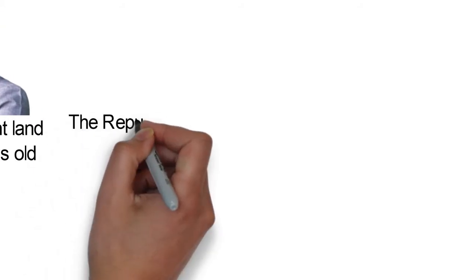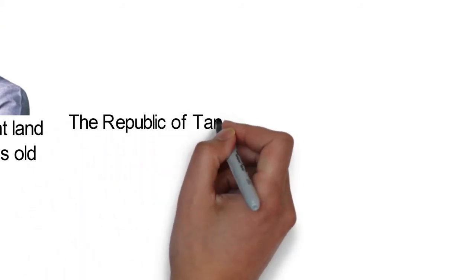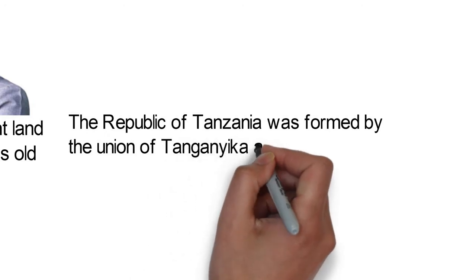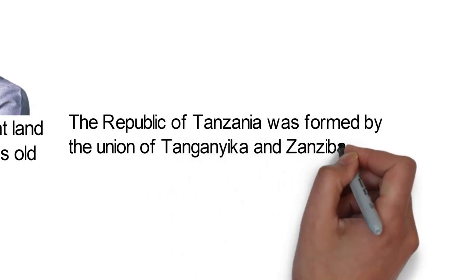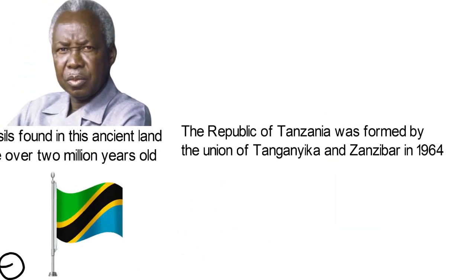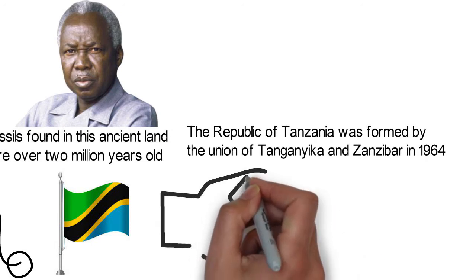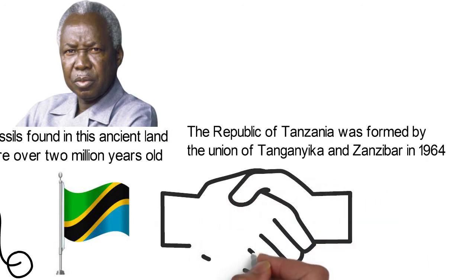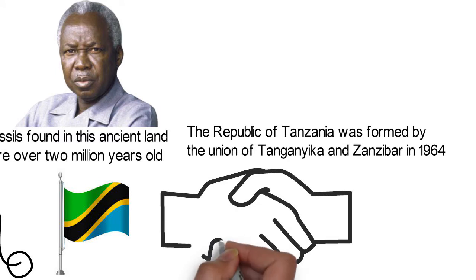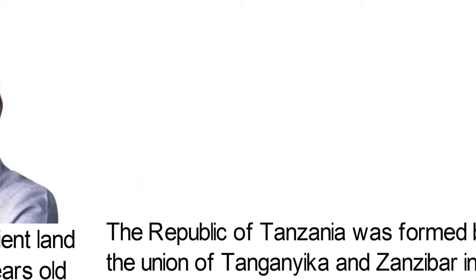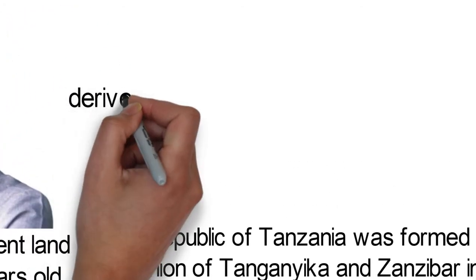Led by anti-colonial activist, politician and political theorist Julius Nyerere, the Tanzanian people eventually gained their independence from Britain on the 9th of December 1961. The Republic of Tanzania was eventually formed by the union of Tanganyika and Zanzibar in 1964. The name Tanzania was created from the names of the two states that got united to form the country — Tan from Tanganyika and Zan from Zanzibar, with the suffix -ia.